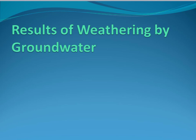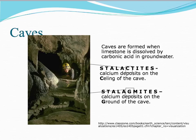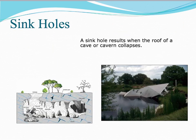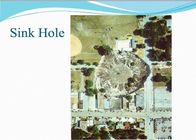Since water is one of our main agents of erosion and has the ability to weather and break things down, there are certain features that result from this. One such feature is a cave. Caves are formed when limestone is dissolved by carbonic acid in groundwater — carbonic acid is formed by CO2 and H2O. Stalactites are found on the ceilings of the cave, and stalagmites are found on the ground of the cave. A sinkhole is another feature — it happens when the roof of the cave or cavern collapses. Very unfortunate for some.